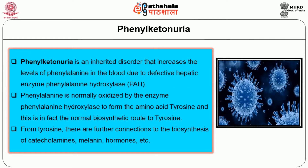Phenylketonuria is an inherited disorder that increases the levels of phenylalanine in the blood due to a defective hepatic enzyme Phenylalanine Hydroxylase. Phenylalanine is normally oxidized by Phenylalanine Hydroxylase to form the amino acid tyrosine, which is the normal biosynthetic route. From tyrosine, there are further connections to the biosynthesis of catecholamines, melanin, and hormones.